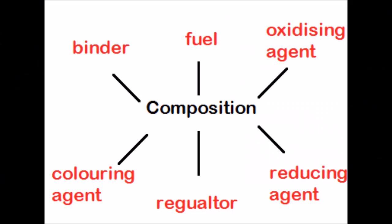The process of colourful sparks being released into the night sky is a carefully timed sequence from lift-off to explosion. The composition of a firework is made up of six major ingredients: fuel, an oxidising agent, a reducing agent, a regulator, a colouring agent and a binder.